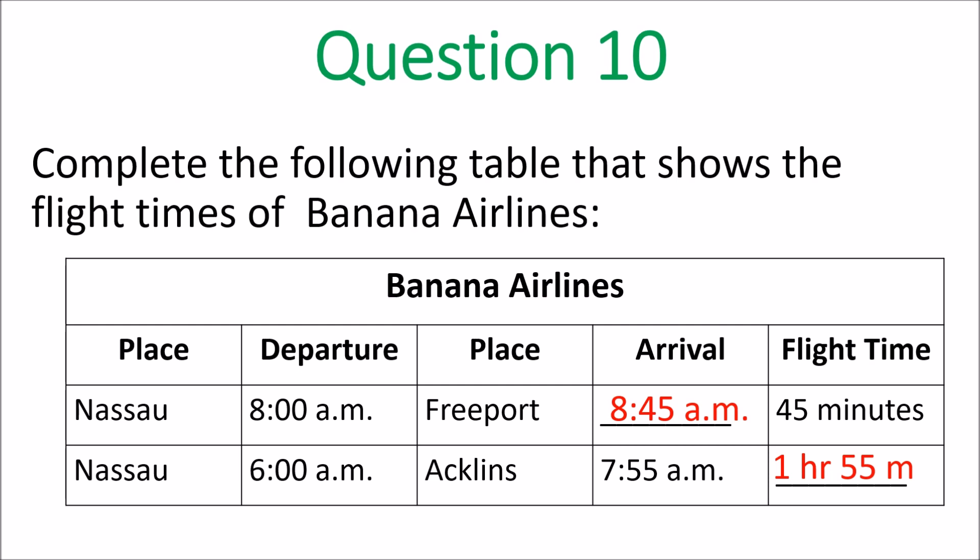Final question — question ten. Complete the following table showing the flight times of Banana Airlines. From Nassau to Freeport, it departs at 8 a.m. and takes 45 minutes, so the arrival time is 8:45 a.m. From Nassau to Acklands, it departs at 6 a.m. and arrives at 7:55, so the flight time is one hour and fifty-five minutes.